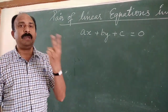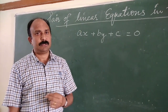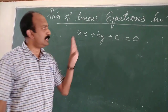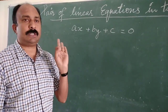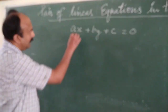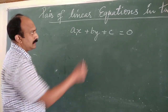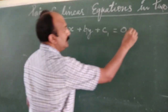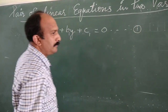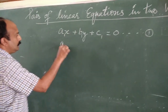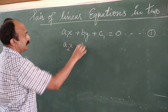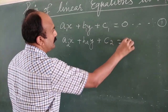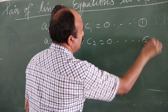But this year we have pair of linear equations, so there will be two linear equations at a time. The standard form of pair of linear equations in two variables is: A1X plus B1Y plus C1 equal to 0 — this is equation number 1 — and A2X plus B2Y plus C2 equal to 0 — this is equation number 2.